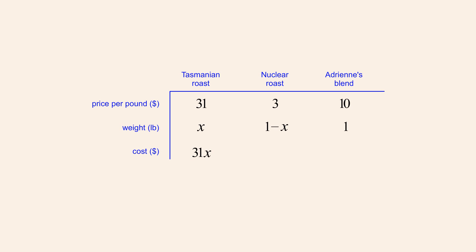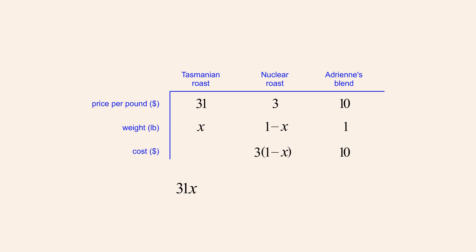Likewise, the cost of the nuclear roast is $3 per pound times 1 minus x pounds. Since the combined cost of the two coffees in the blend must be $10, we can create an equation which says that the cost of the Tasmanian roast plus the cost of the nuclear roast equals $10.